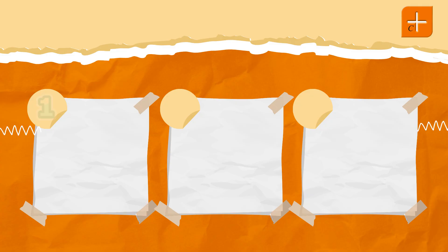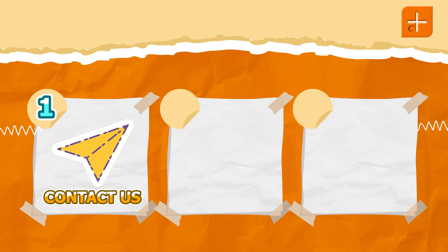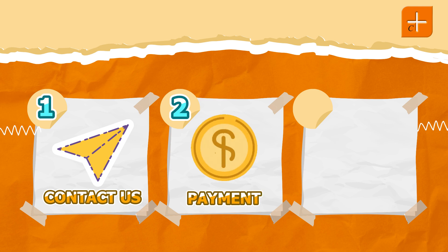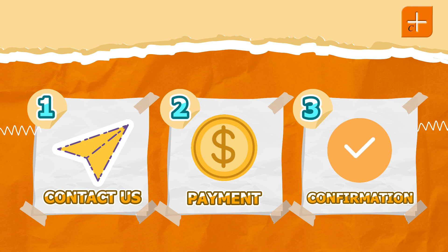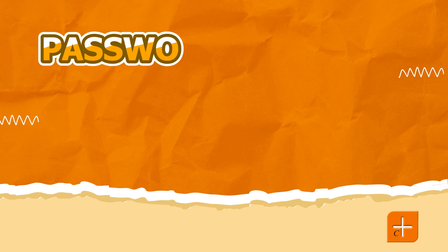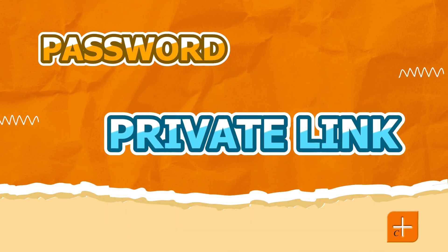And the best part? You can access this entire library of knowledge in three simple steps. First, send us a direct message on our social media channels. Then, after inquiring about the price, you can proceed with the payment. And finally, send us a direct message with your name, email address, and a screenshot of your payment confirmation.